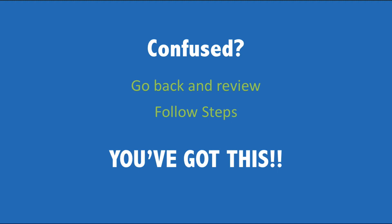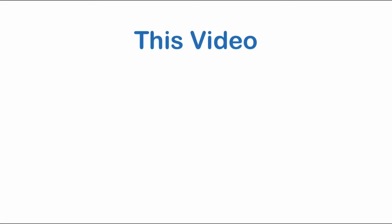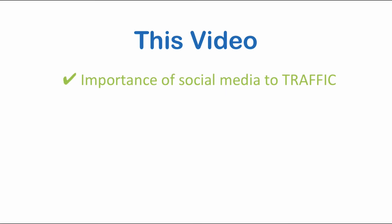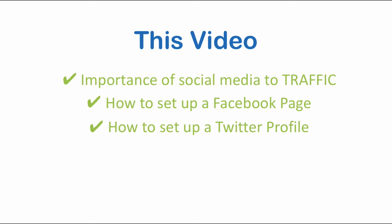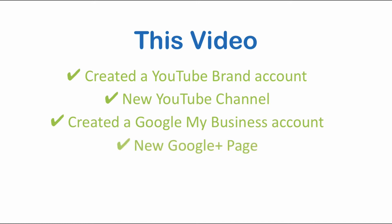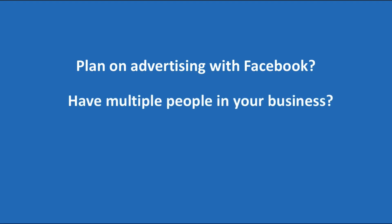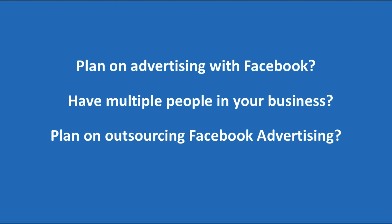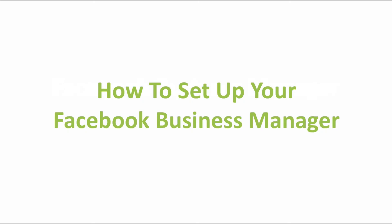Let's sum up what we've accomplished. In this video we talked about the importance of social media for bringing traffic to your site, showed you how to set up a Facebook page, a Twitter profile, started from scratch with a new Google account and Gmail, created a YouTube brand account and channel, created a Google My Business account to create a Google Plus page, and placed all social profile URLs and the Twitter username into Yoast SEO on your WordPress dashboard. If you plan on advertising on Facebook, have multiple people that need access to your Facebook page, or plan to outsource Facebook advertising, you'll want to set up a Facebook Business Manager — I split up this video into a short part two showing you how to do just that.